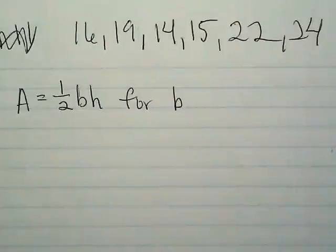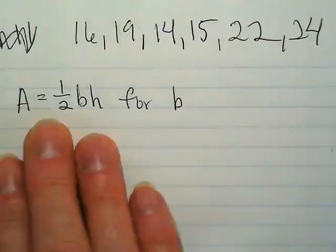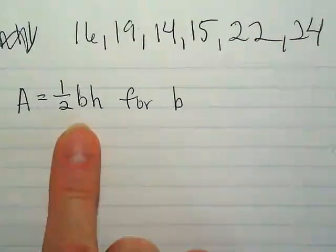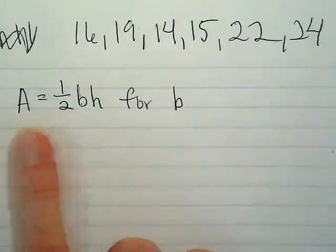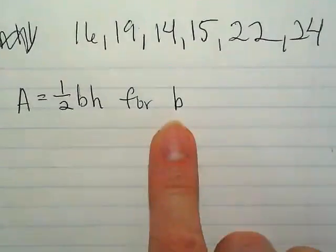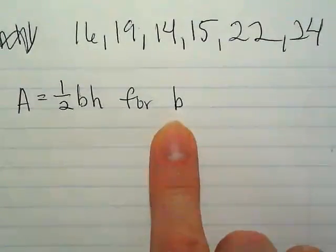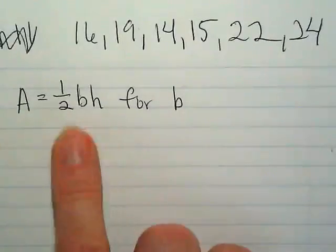But what if I told you that I knew that the area of a triangle was a number, and I gave you a number, and I knew that the height of the triangle was another number. Could you use this formula to find the base for me? Yes, probably. Oh, nice. And that's why we're doing this. If you can convert this formula to be solving for the base, if I gave you the numbers that the area and the height were, you could tell me what the base is. Okay?